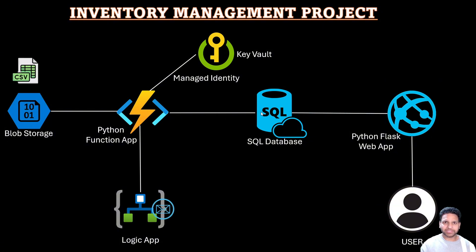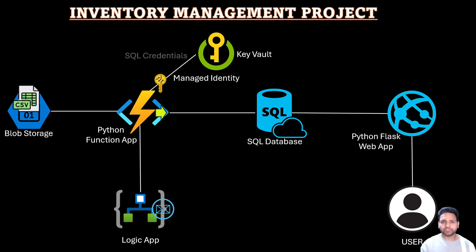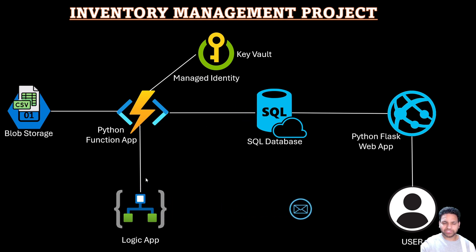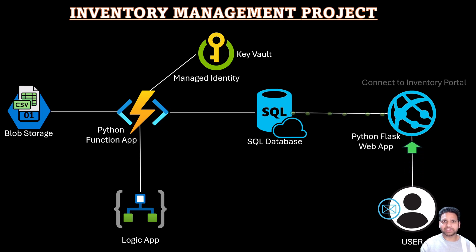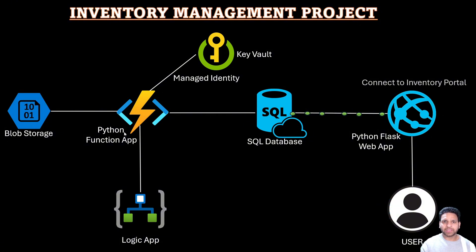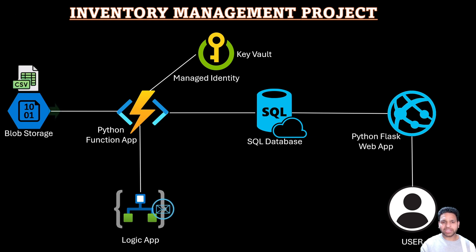Once the database is updated, we need to notify users that the inventory update has happened. For that reason, we'll create an Azure Logic App with two tasks: receiving an HTTP trigger and sending an email. The same Function App will send an HTTP POST to the Logic App, and once that message is received, the Logic App will trigger an email notification to the user.